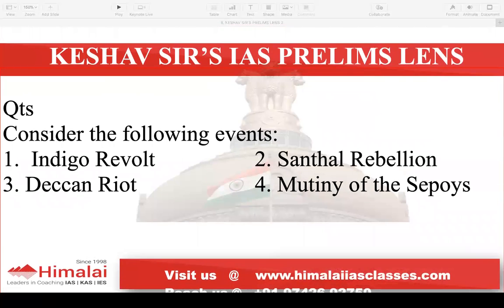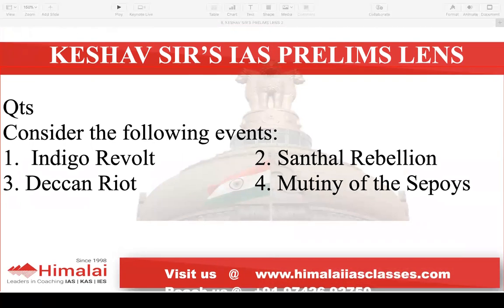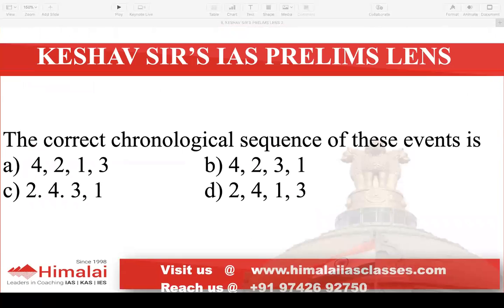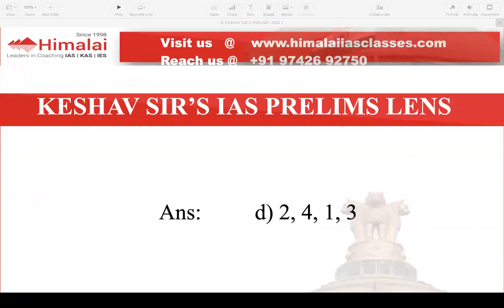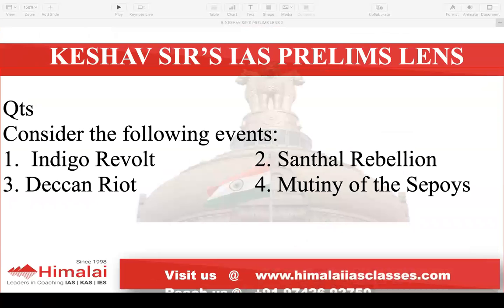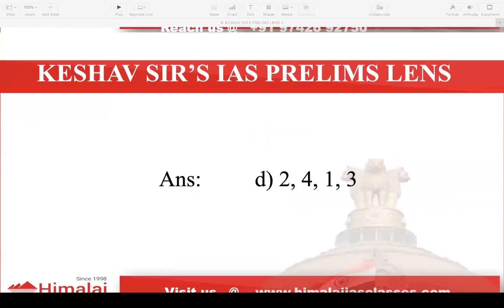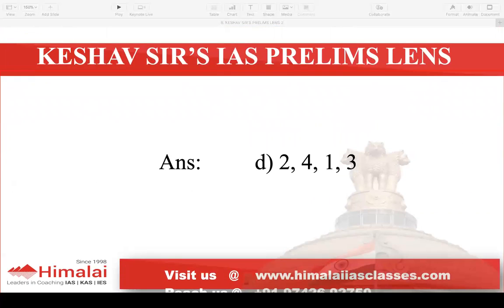Next question: Consider the following events — Indigo Revolt, Santal Rebellion, Deccan Riot, Mutiny of Sepoys. What is the correct chronological order? The Santal Rebellion happened first, then the Revolt of 1857, then the Indigo Revolt, and then the Deccan Revolt. So the answer is 2, 4, 1, 3.